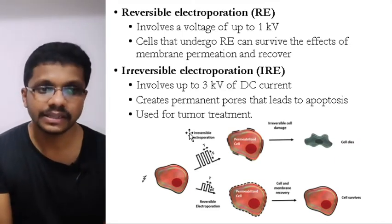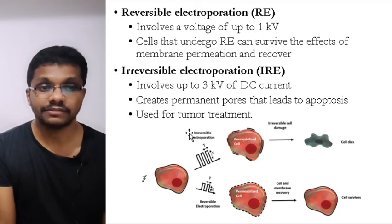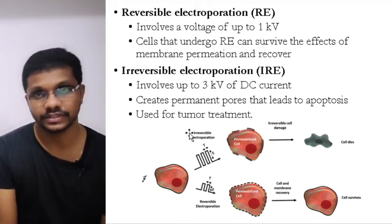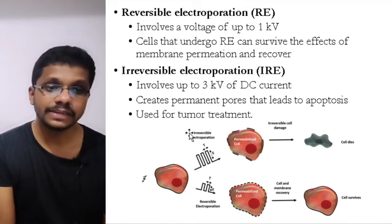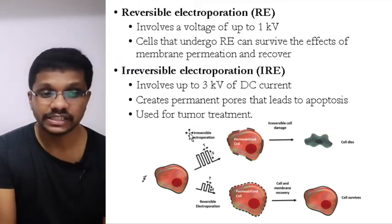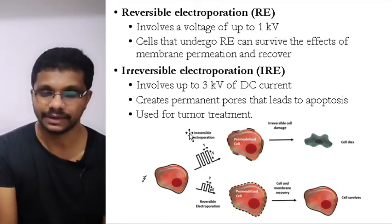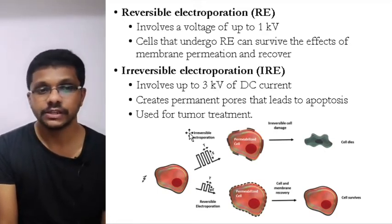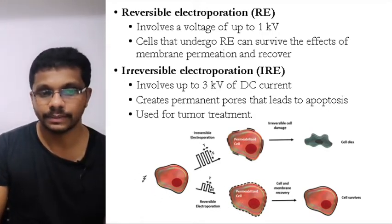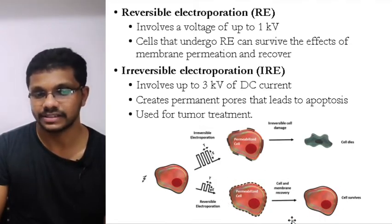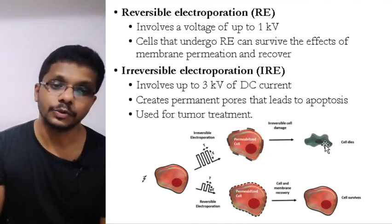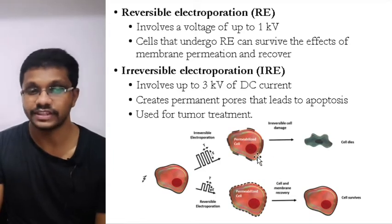Electroporation is divided into two types: reversible and irreversible. In reversible electroporation, voltage up to 1 kV is used; pore formation is transient, the pores seal afterwards, and DNA is inside the cell. In irreversible electroporation, voltage up to 3 kV (DC current) is used — this very high voltage leads to permanent pores in the cell membrane, which leads to cell death by apoptosis. Irreversible electroporation is used for treating diseases like tumors. With low voltage there is increased permeability and cell recovery with DNA inside; with very high voltage there is permanent membrane damage and apoptotic cell death.